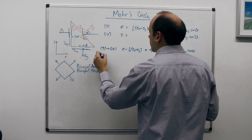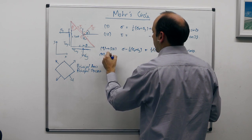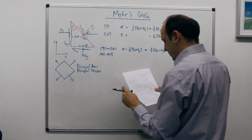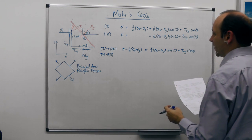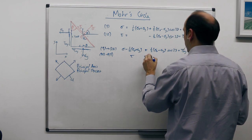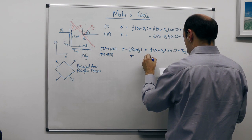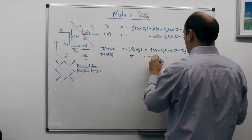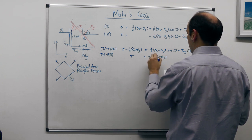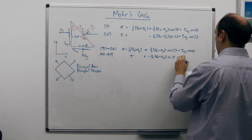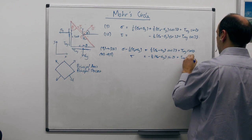We take equation 10 and rearrange it to get equation 29: minus a half (sigma_x - sigma_y) sin 2θ plus τ_xy cos 2θ.